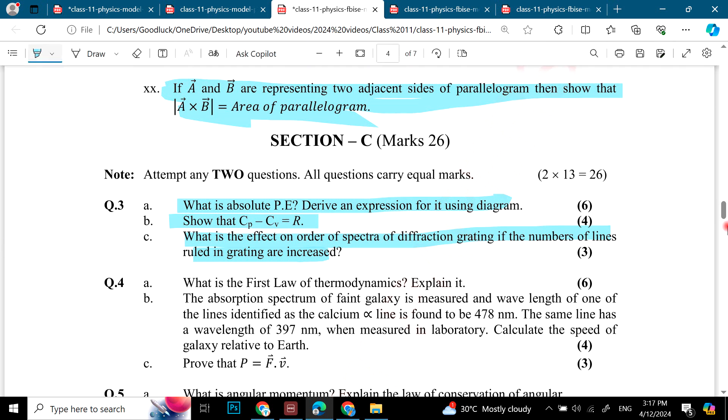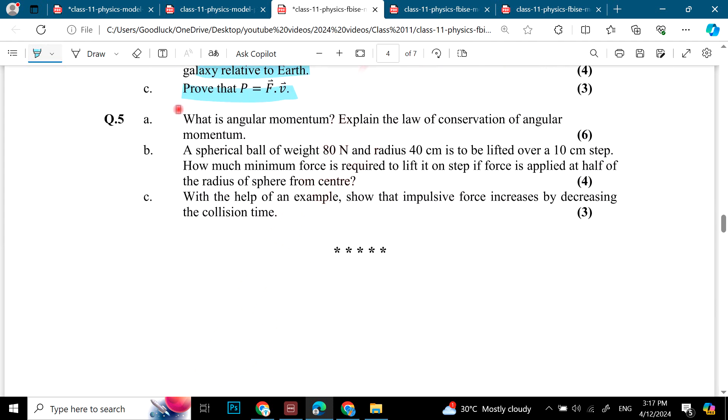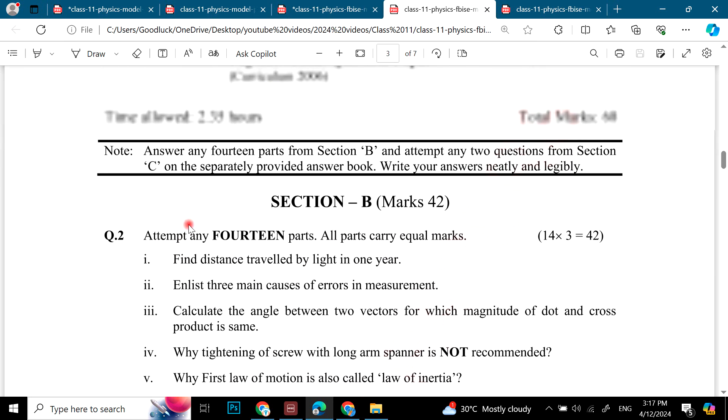After that, absolute potential. CP-CV. Effect of order of spectrum. A new question. You can see that if you have prepared the first paper, so you will have such a bunch of questions which will be repeated like the first law of thermodynamics in the first paper. Numerical, of course, this is a new numerical. After that, this is a new topic. Angular momentum, chapter 5. Spherical ball of weight, this is repeated. With the help of an example show the impulsive force increases by decreasing the collision time.